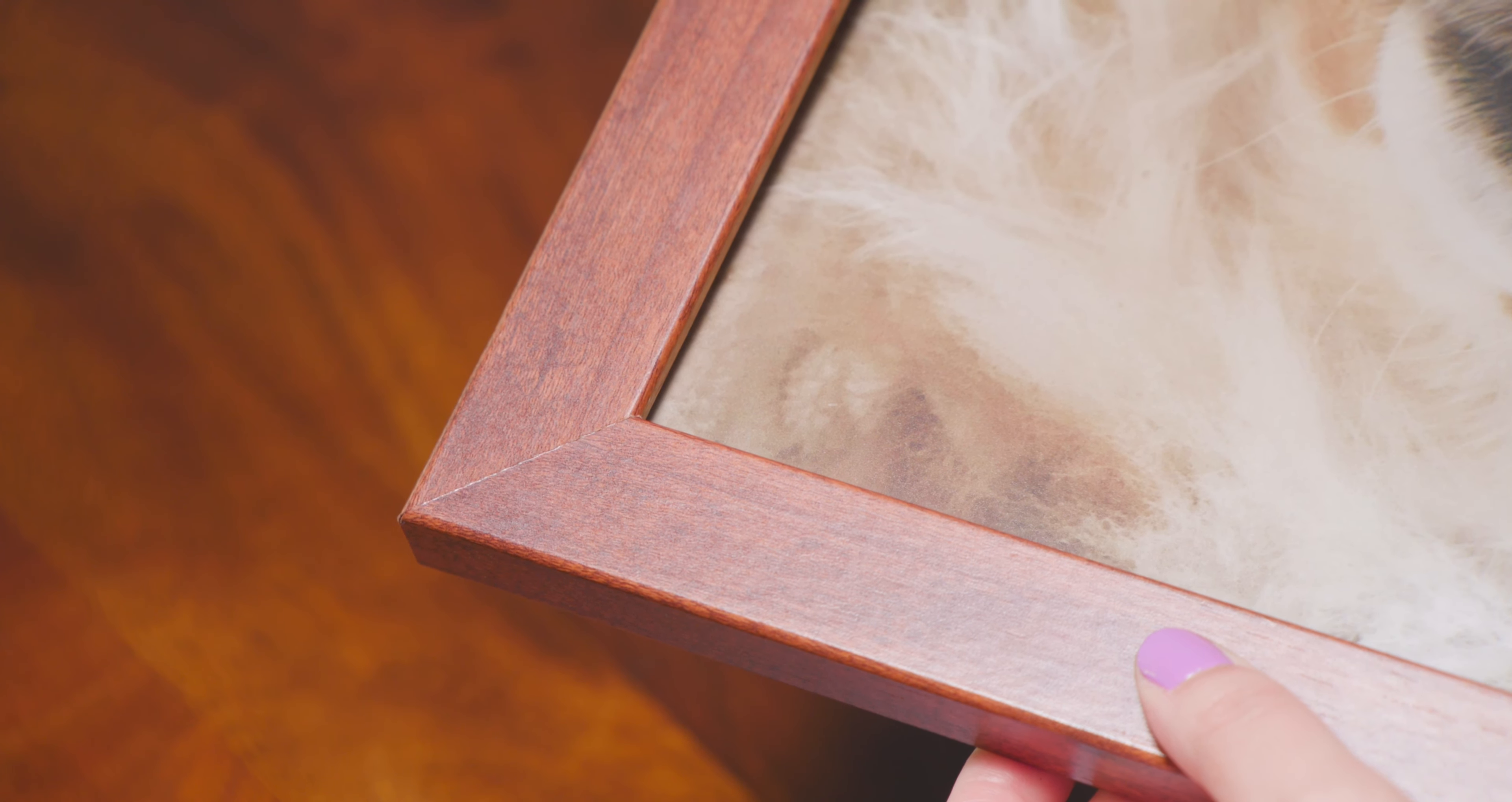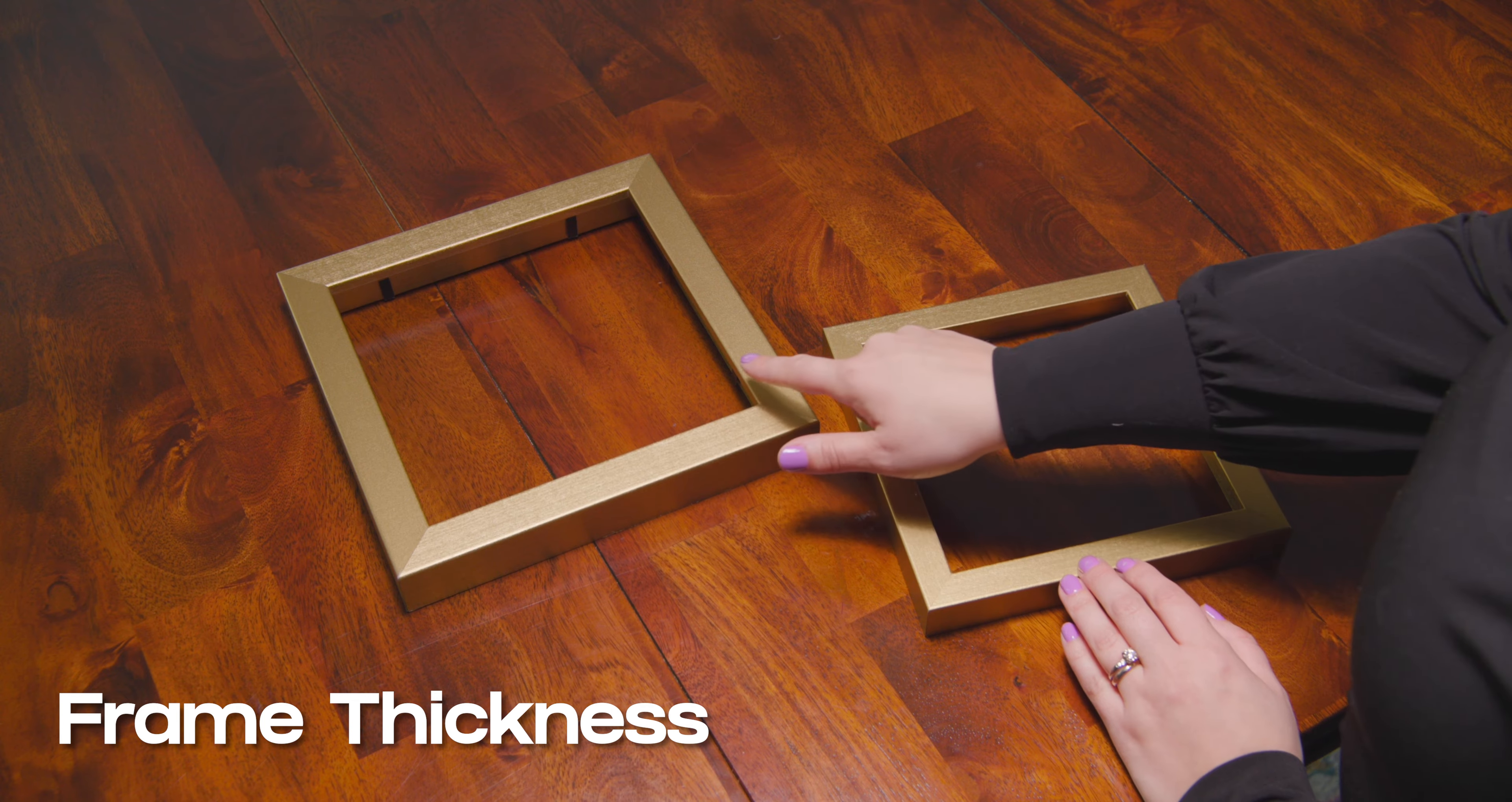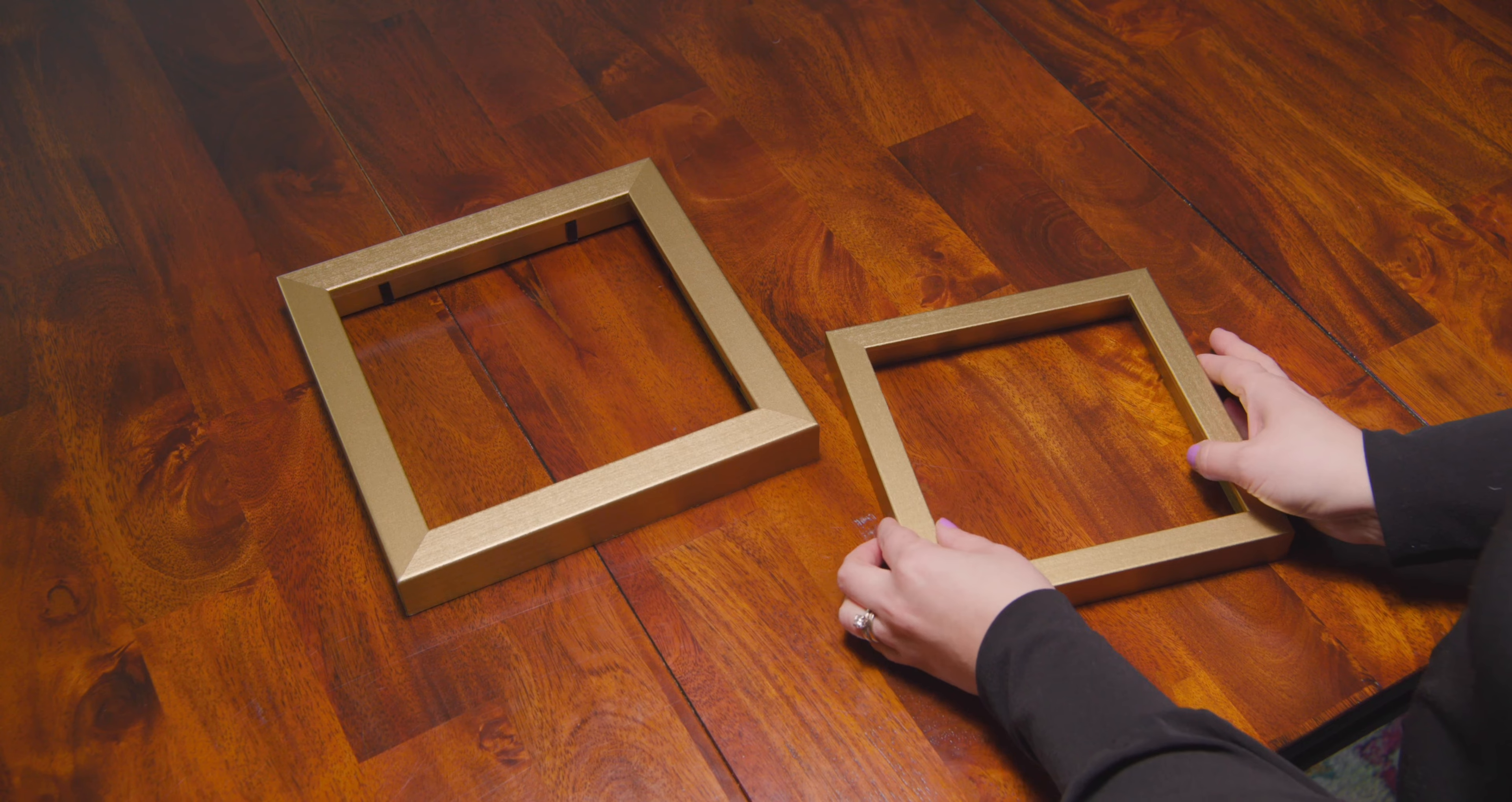Next up is the frame thickness. This is the size of the visible surface on the face of the frame. In other words, this is how thick or thin each side will appear when you look at it straight on.